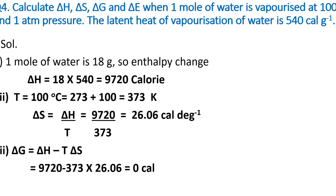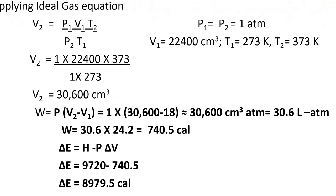Applying the ideal gas equation: P₁V₁/T₁ = P₂V₂/T₂. Here P₁ = P₂ = 1 atm, V₁ = 22400 cm³, T₁ = 273 K, T₂ = 373 K. Putting these values into the equation, we get V₂ = 30,600 cm³.